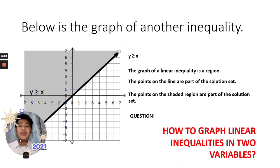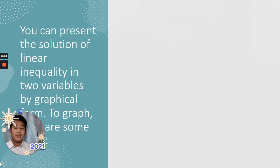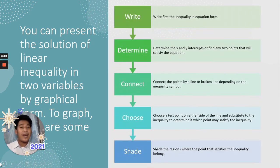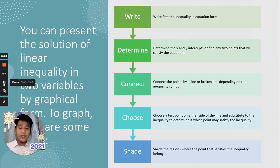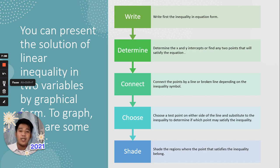How to graph linear inequalities in two variables — here are the steps. First, write the inequality in equation form. Second, determine the x and y intercepts, or find any two points that will satisfy the equation. Third, connect the points by a solid line or broken line depending on the inequality symbol. Fourth, choose a test point on either side of the line and substitute it into the inequality to determine which side satisfies the inequality. And lastly, shade the region where the point that satisfies the inequality belongs.